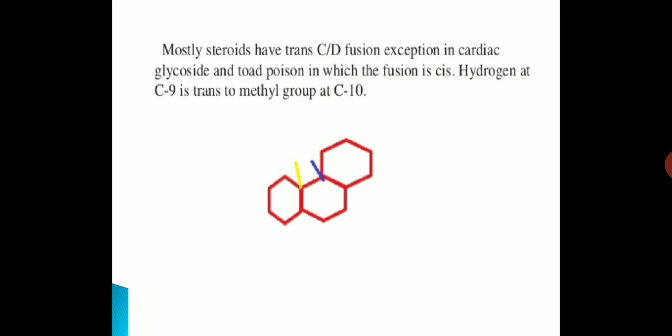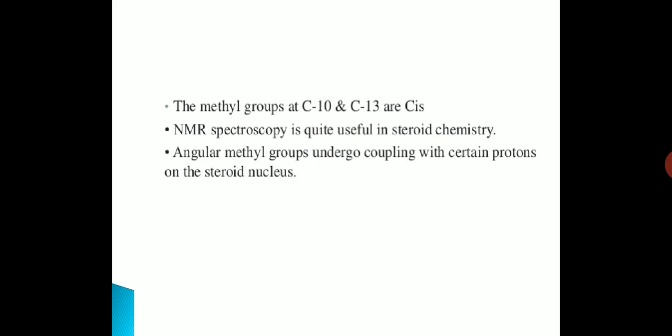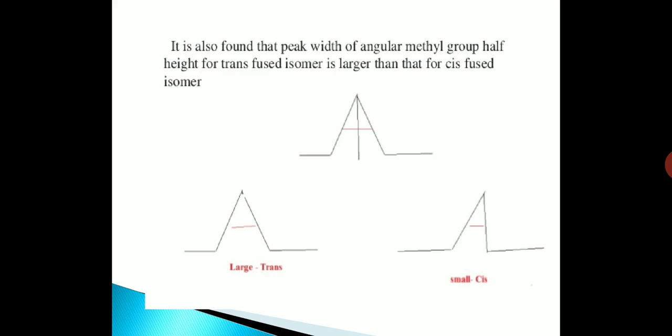The hydrogen at C9 is trans to the methyl group at C10. The methyl groups at C10 and C13 are cis. NMR spectroscopy is quite useful in steroid chemistry. Angular methyl groups undergo coupling with certain protons on the steroid nucleus. It is also found that the peak width at half height of the angular methyl group for a trans-fused isomer is larger than that for a cis-fused isomer, as we can see in the following diagrams.